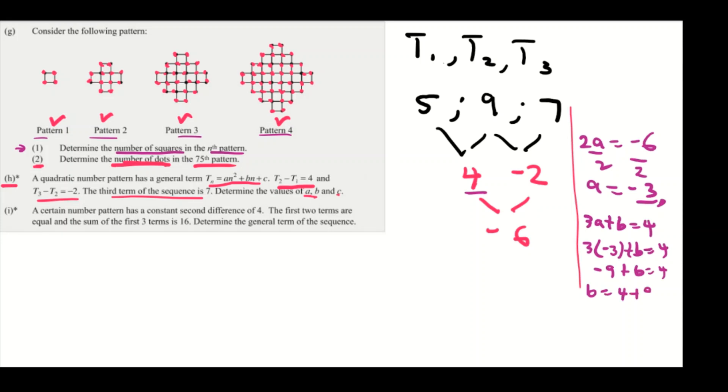And then a plus b plus c equals the first term, which is 5. Then a is -3, b is 13, plus c equals 5. And then you can transpose everything to the other side. You have c being equals to -5. So now we're done finding the value of a, b, and c, which is what was required: find the values of a, this one, b, this one, and c, this one. Now we are done with this question.